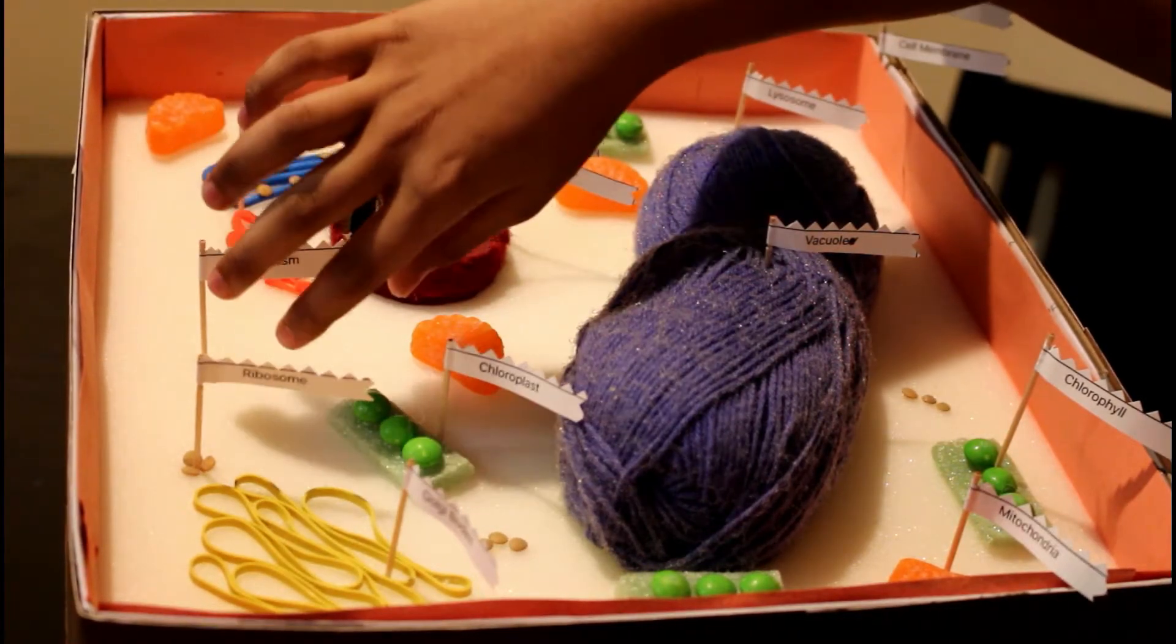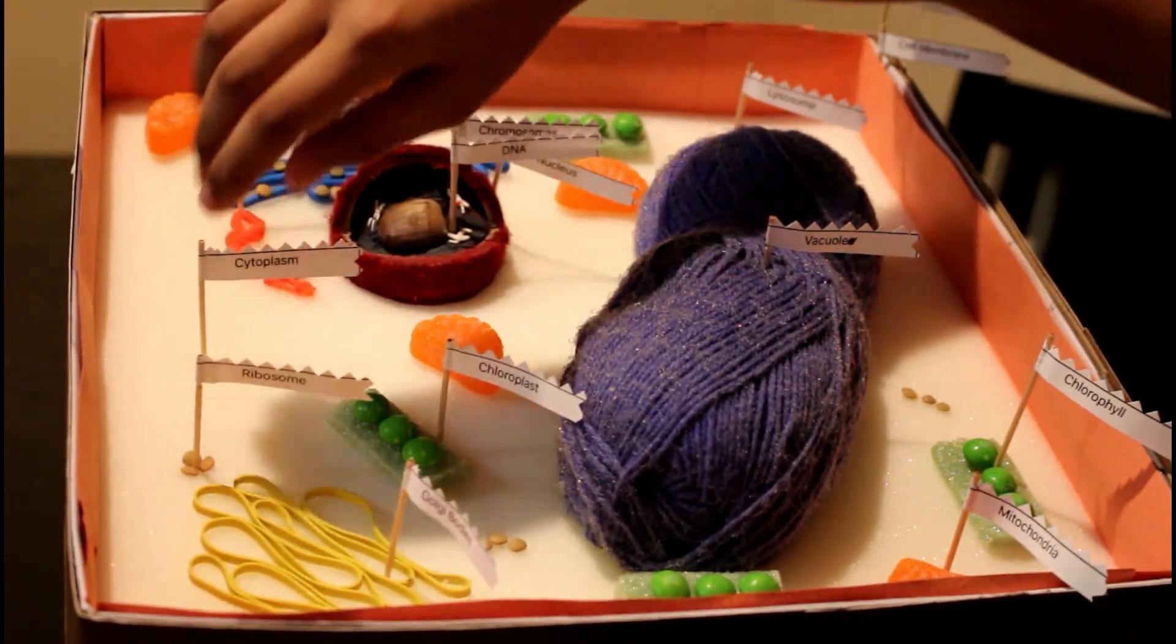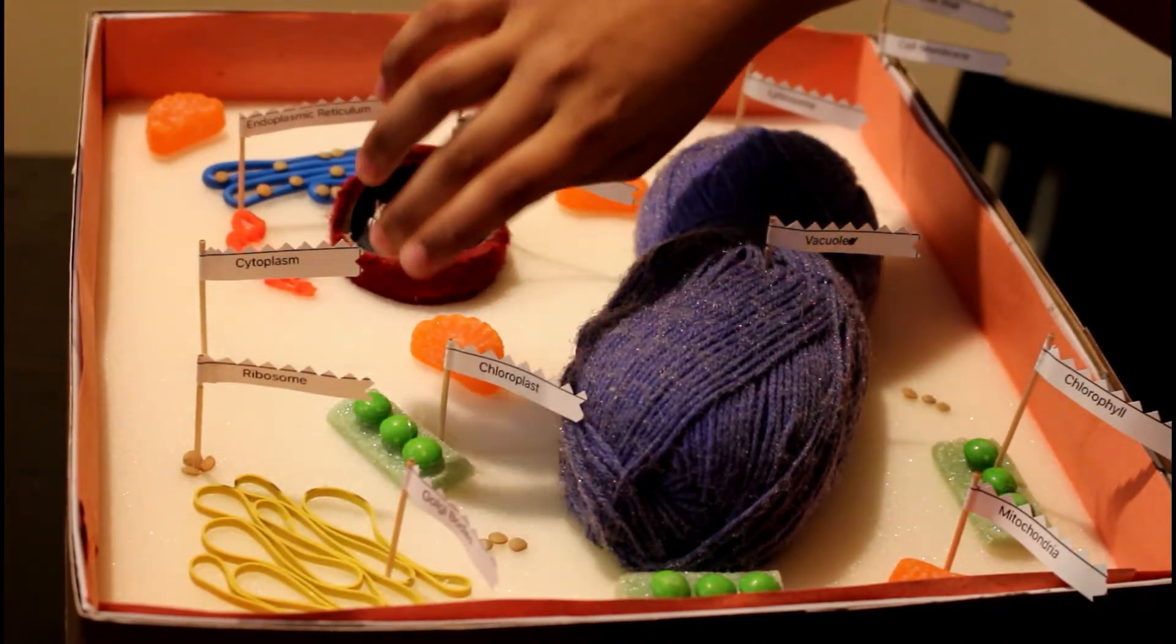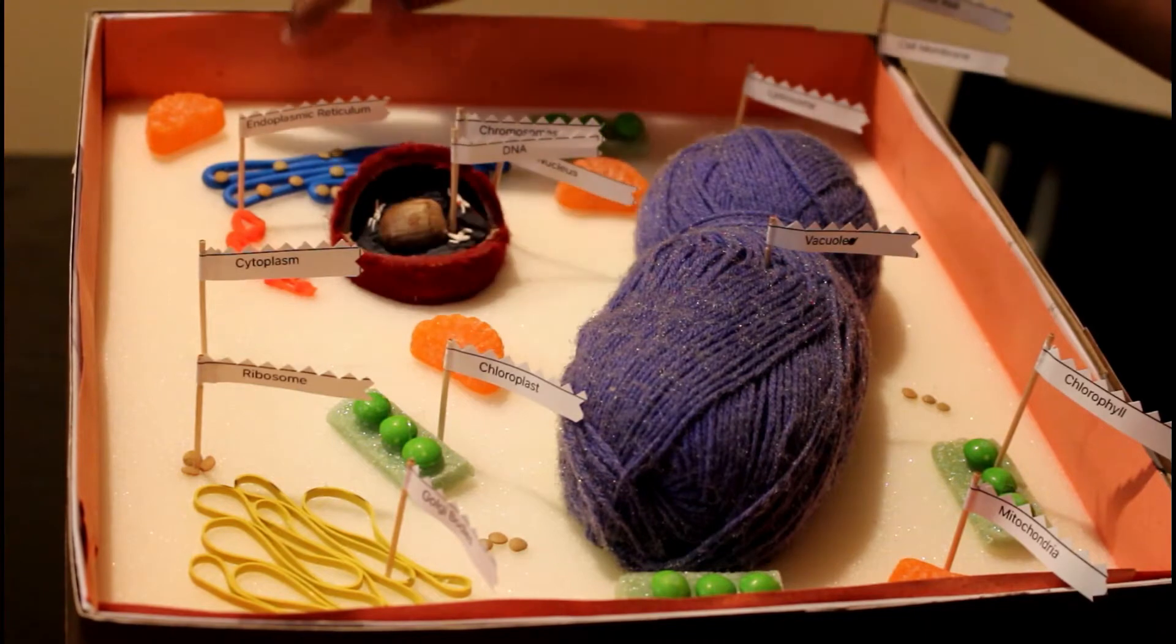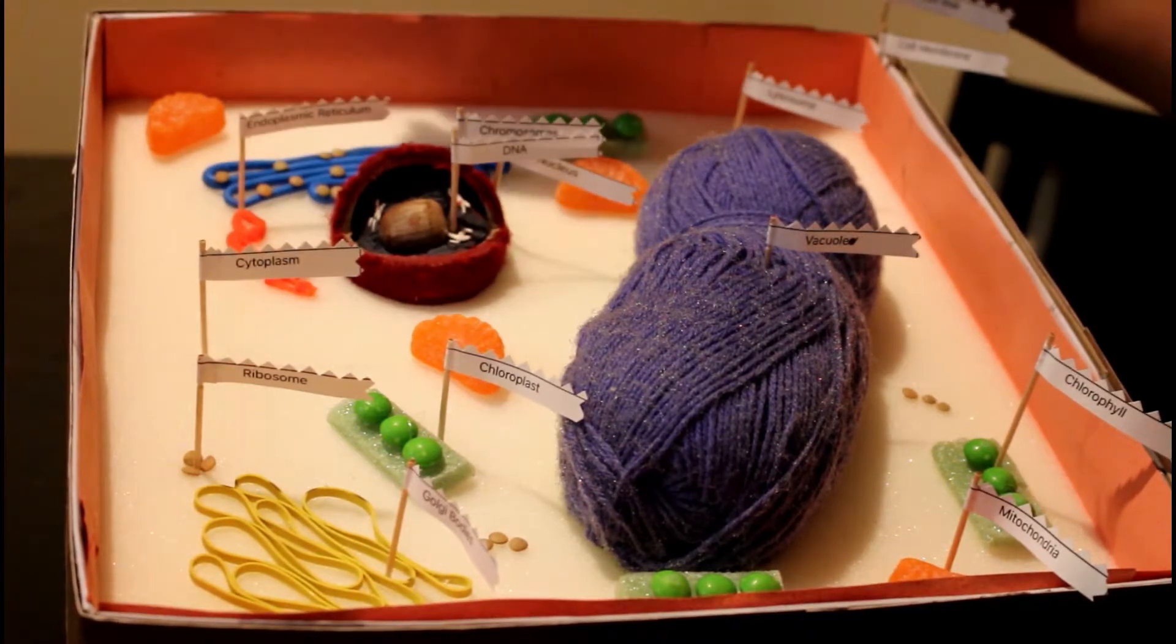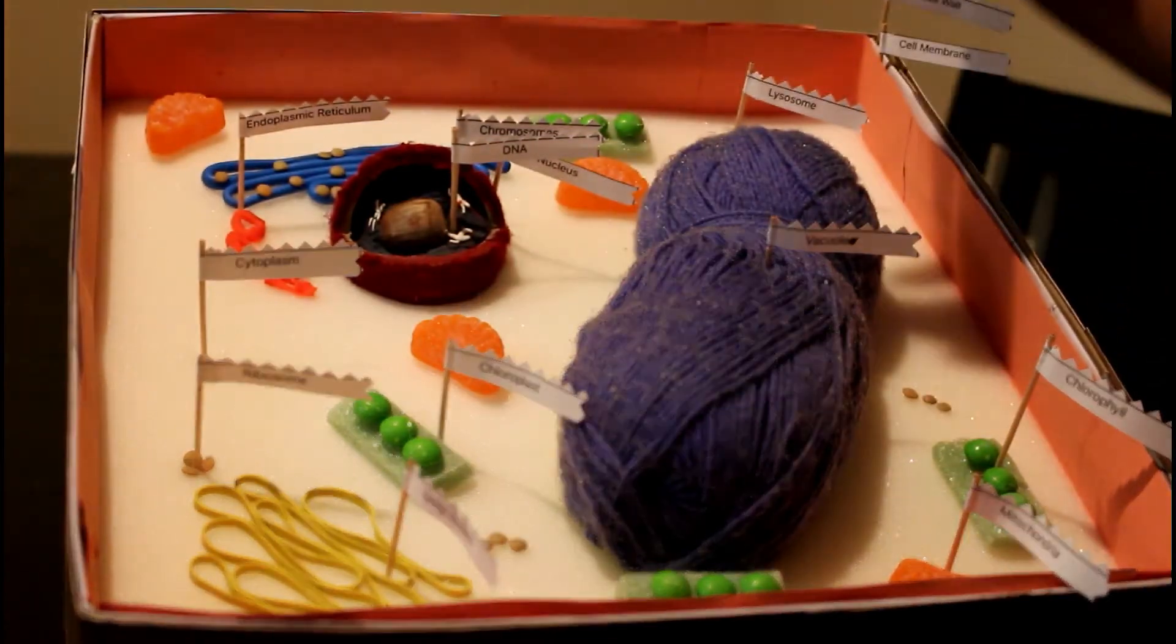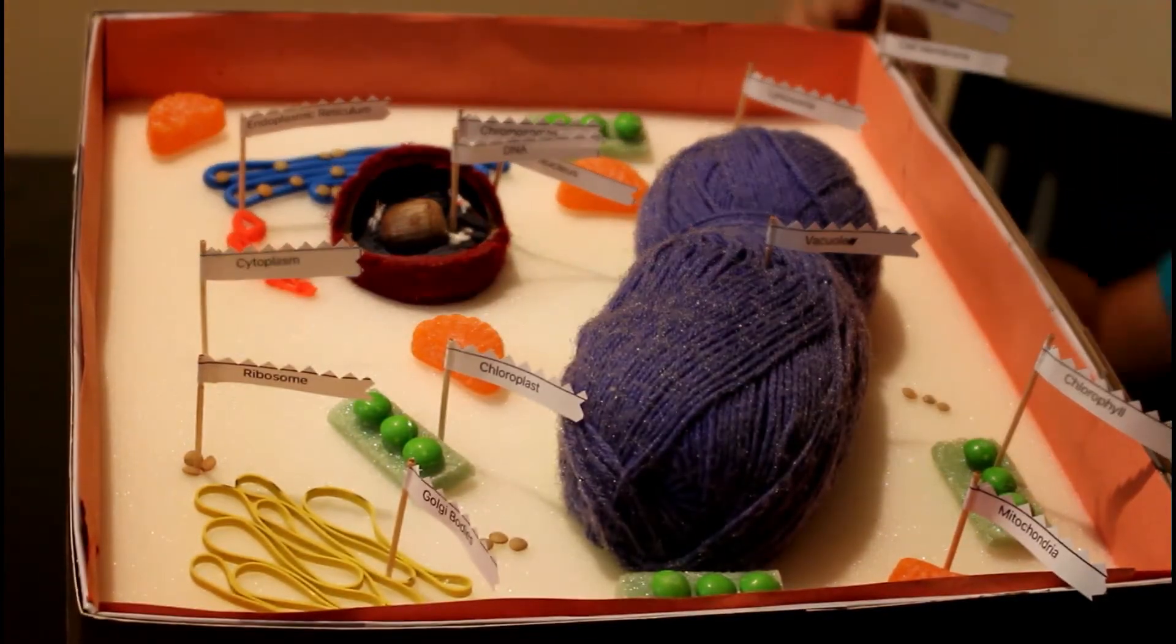Ribosomes are inside the cell and they're small bodies floating in the cell. They could be free or attached to the endoplasmic reticulum. What they do is produce proteins.